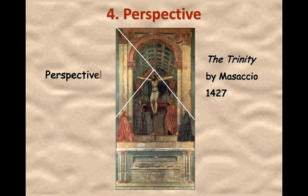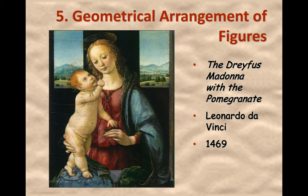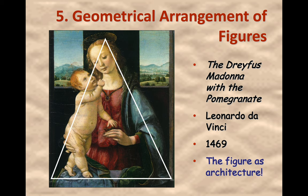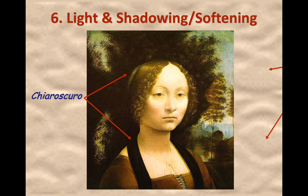Some new techniques were pioneered, like perspective and the use of geometry in art. Here is a painting by da Vinci called the Dreyfus Madonna — Madonna referring to Mary, the mother of Jesus. We can see the blue cloak, the halo above her, and the use of geometry in how he sets up the painting. Other techniques pioneered at this time deal with light and shadowing to make paintings more lifelike.